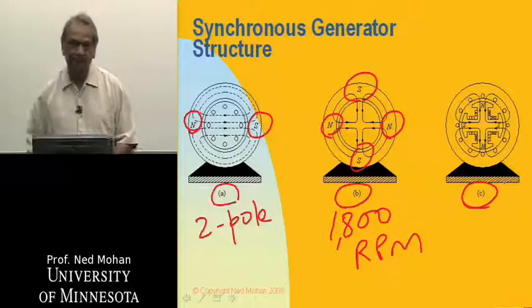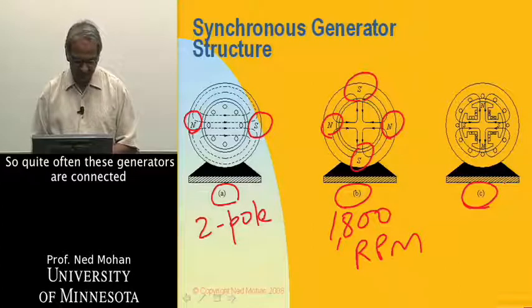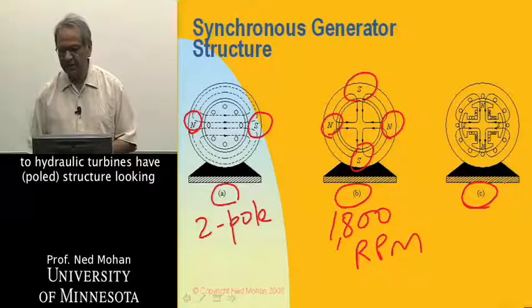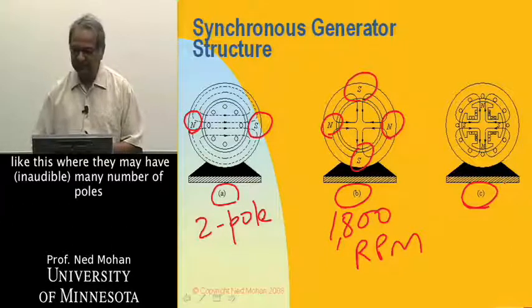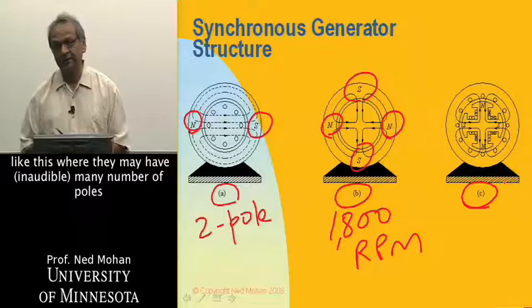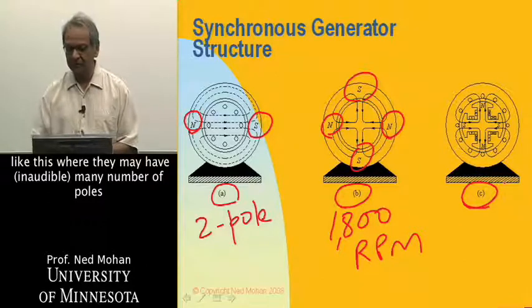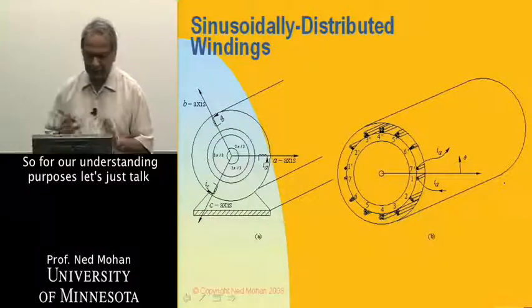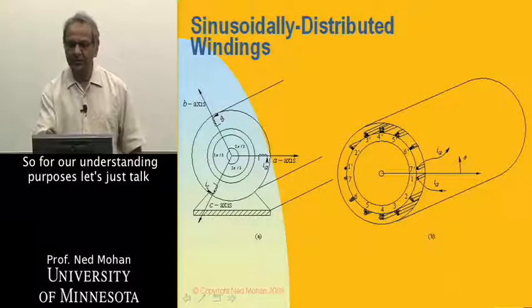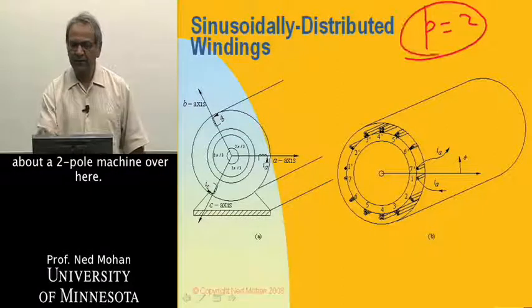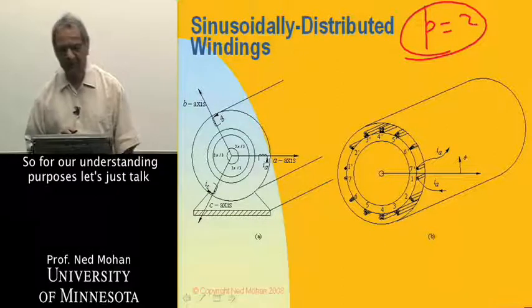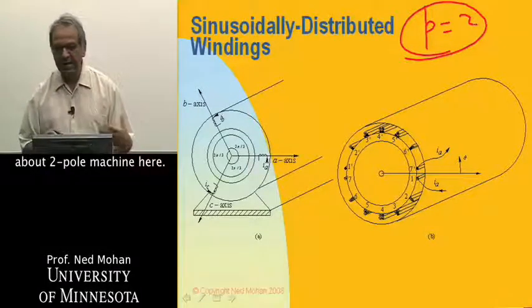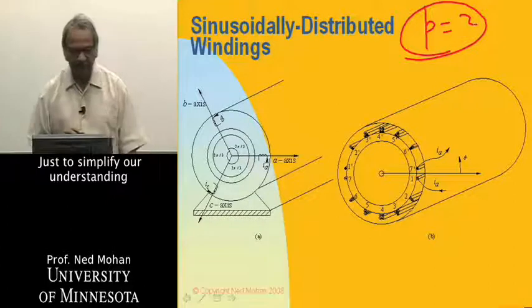So quite often, these generators connected to hydraulic turbines have pole structure looking like this, where they may have a lot many number of poles than I'm showing over here. So for our understanding purposes, let's just talk about just two-pole machine here, just to simplify our understanding, and then it can be extended to any number of pole pairs.